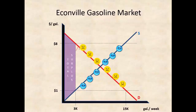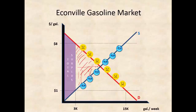We could have had all these deals from 3,000 up to the equilibrium made, and it would have been gains for the buyers because the price would have been below their valuation on the demand curve, and gains for the sellers because that price would have been above their cost level on the supply curve. So we had all this surplus left on the table when we weren't at equilibrium.